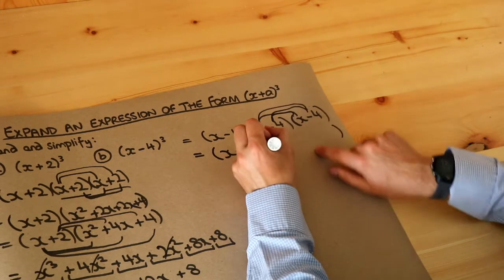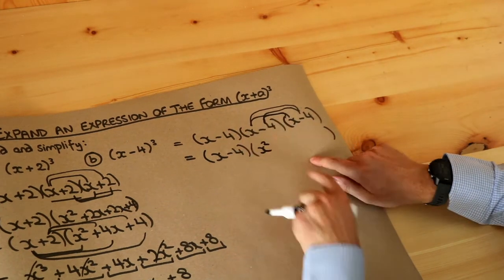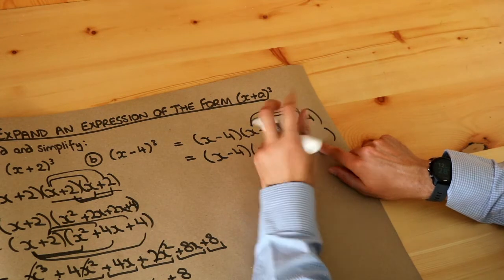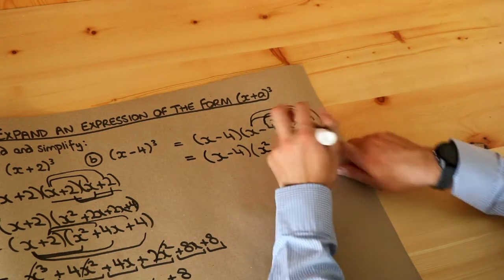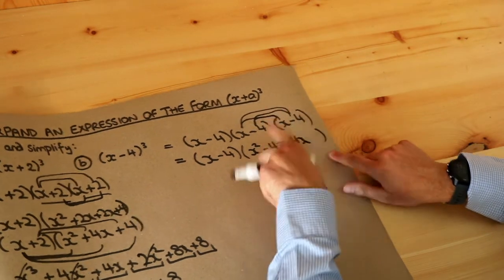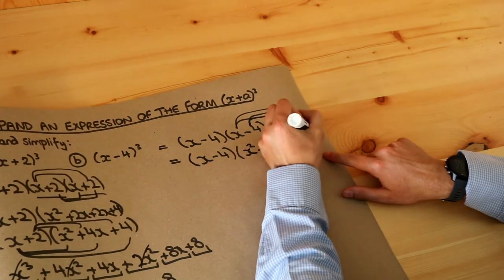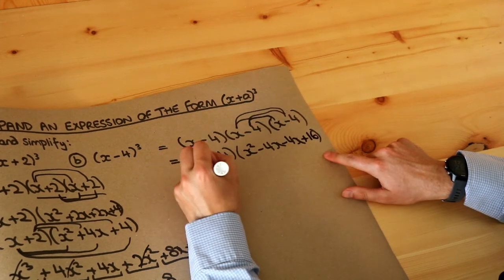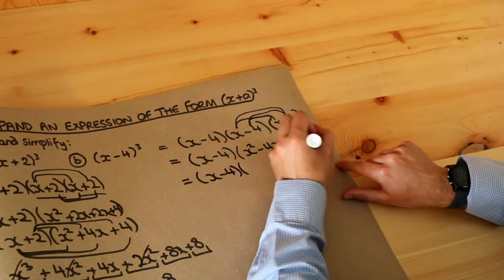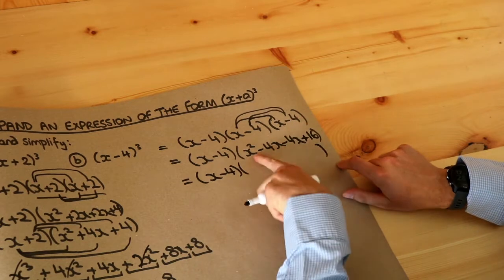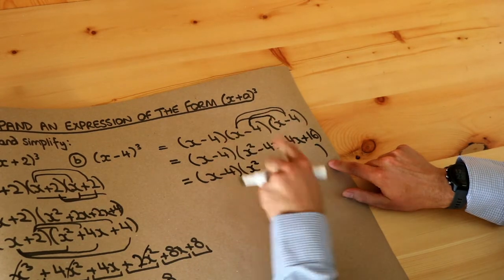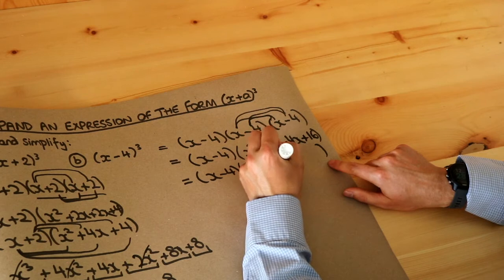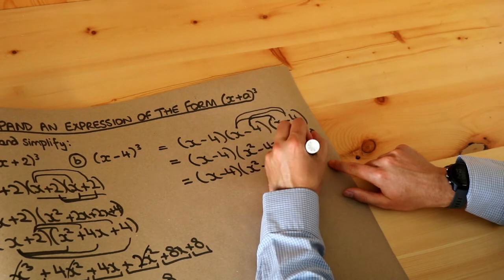That gives x squared. x times minus 4 is minus 4x. Minus 4 times x is minus 4x. And minus 4 times minus 4 is plus 16. Let's tidy up: that's the only x squared term. Minus 4x minus 4x is minus 8x. And we've got the plus 16. So the inner bracket simplifies to x squared − 8x + 16.